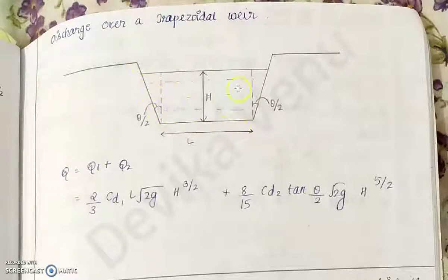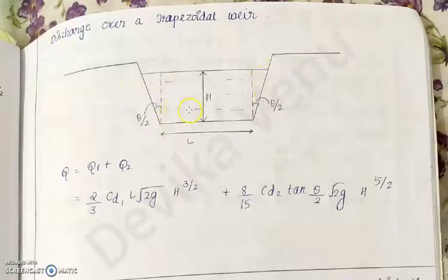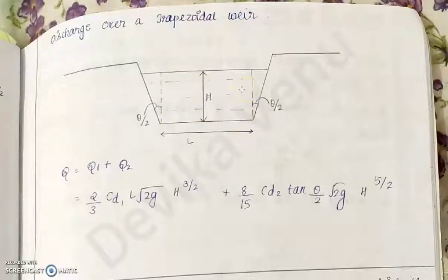You know that the slope of the side edges should be the same. When you join these two small right-angle triangular portions, you will get a proper triangular weir, and there is a rectangular weir over here. So what will be the discharge? It will be the combination of the triangular weir and the rectangular weir.